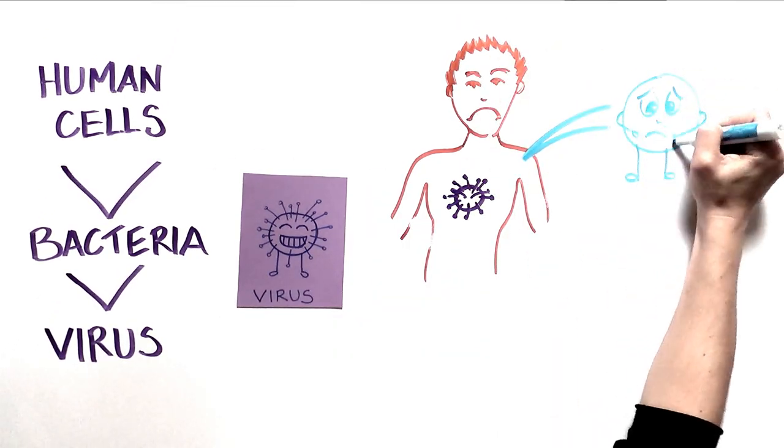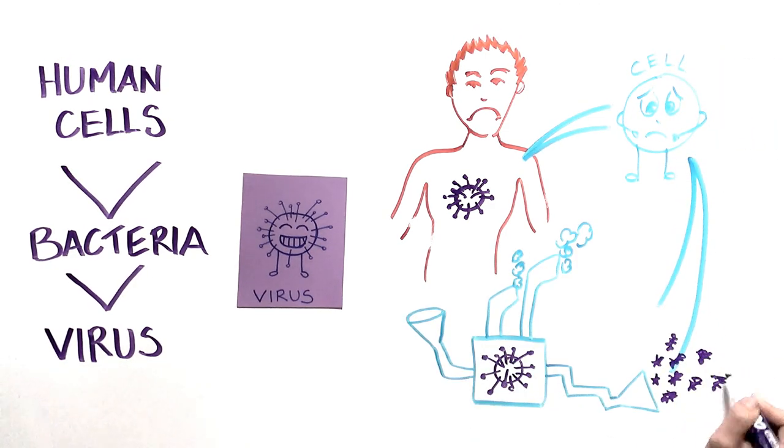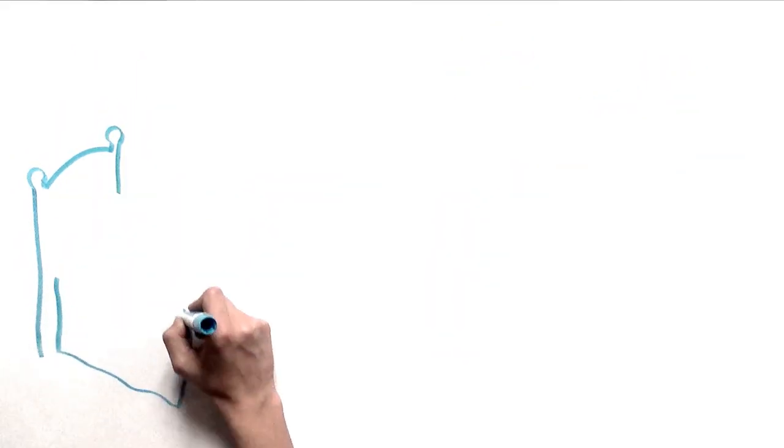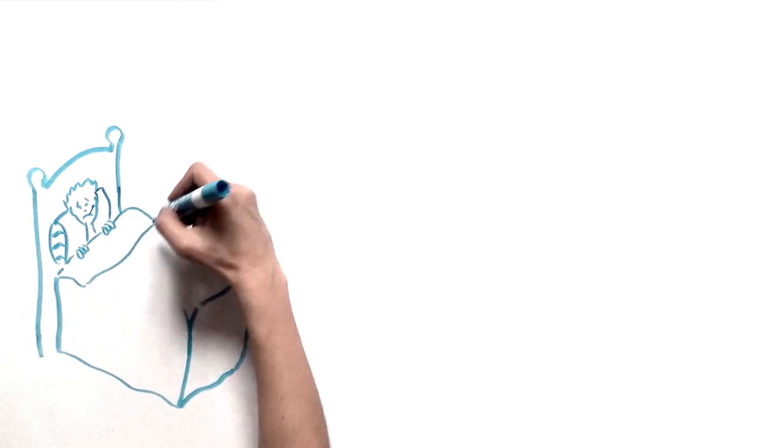They reproduce by taking control of living cells in your body and using your cell's machinery to produce thousands of identical copies at a mind-blowing rate. Viruses are responsible for causing infectious diseases like the common cold, flu, measles, Ebola, Zika, and so on.